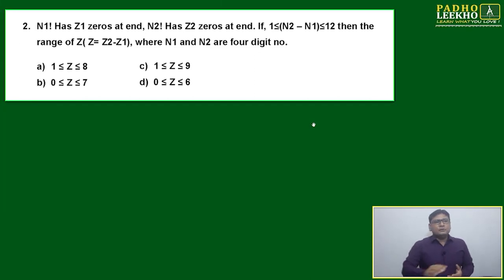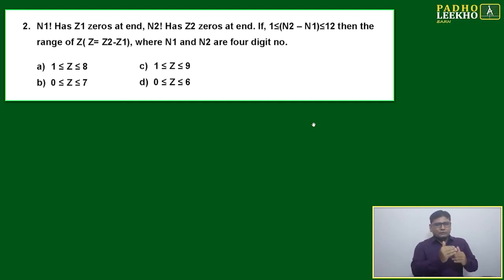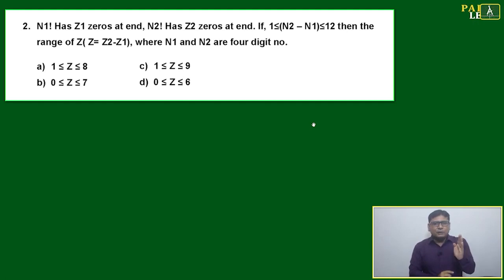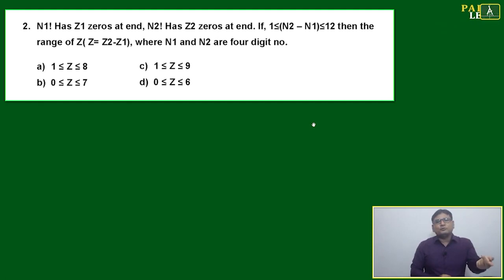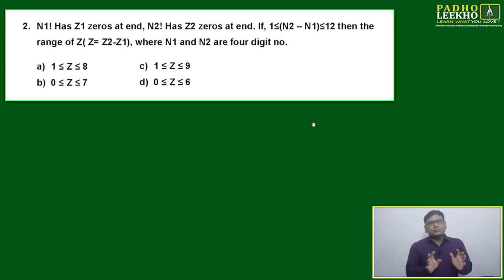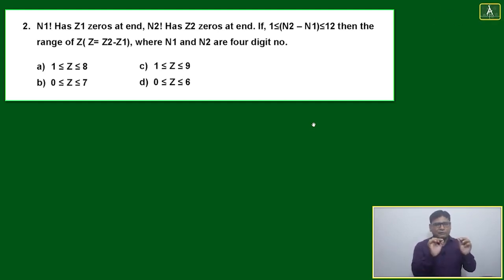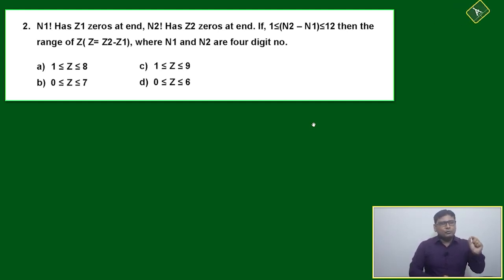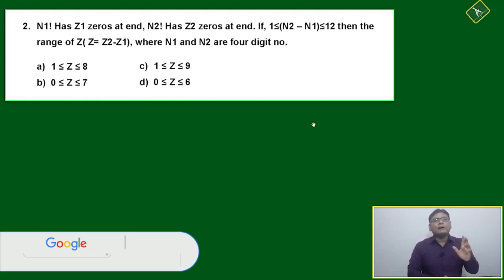Questions will come based on factorials and number of trailing zeros. After every interval of 5, the number of zeros changes by 1. If that multiple of 5 is also a multiple of 5², the zeros jump by 2; if a multiple of 5³, by 3; if a multiple of 5⁴, by 4. Now if that multiple of 5 — whether it is 5k, 25k, 125k — is expressed in variable form rather than concrete numbers, the analysis changes significantly.